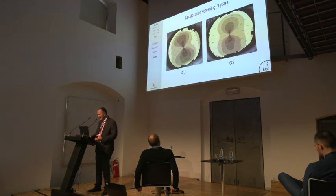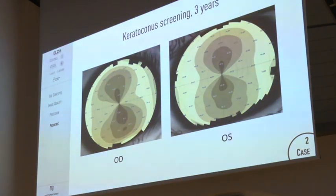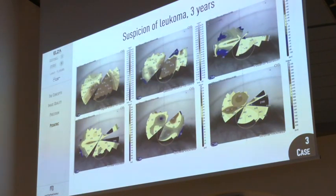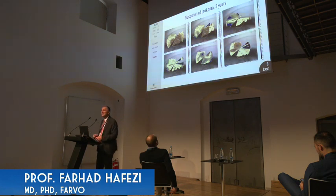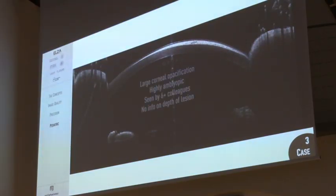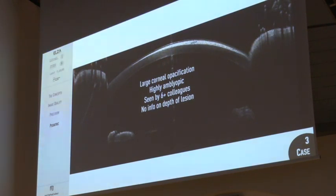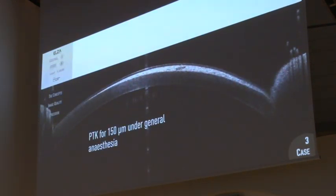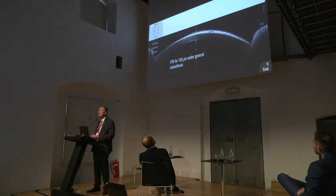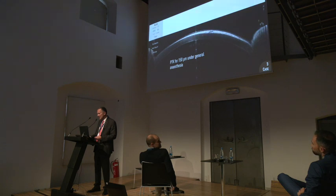The next case was very interesting — seen by six colleagues before, including two university clinics. Our advantage was having the MS39, because the suspicion in this three-year-old was leucoma: a whitish eye when you looked at the young patient. You can see how shattered the data are, but we got some data and an OCT image. What we found was not a leucoma but a dense anterior scar of roughly 150 microns of unknown origin covering almost the entire eye — a highly amblyopic child. We performed a deep PTK under general anesthesia, and the child today has a visual acuity of 0.4. Under other circumstances, there is no way to diagnose this and take the appropriate treatment.